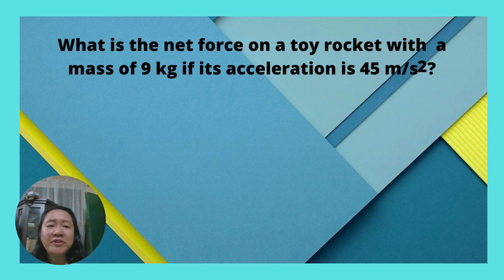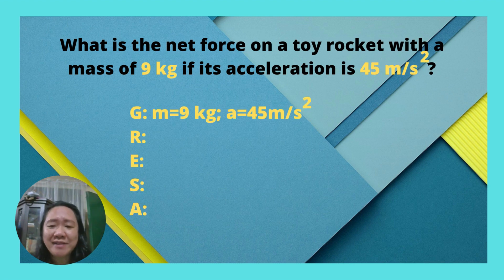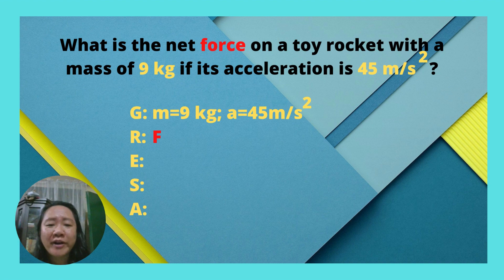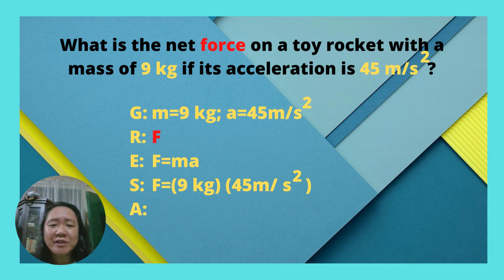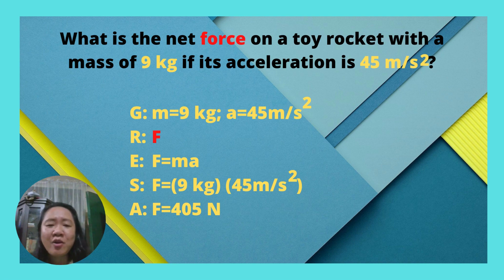What is the net force on a toy rocket with a mass of 9 kg if its acceleration is 45 m per second squared? Using the GRESA method: our given are mass = 9 kg and acceleration = 45 m/s². What is required is the force, F. Our equation is F = mass times acceleration. Substituting, F = 9 kg × 45 m/s². Our answer is 405 N, or Newtons, because the unit of force is Newton.